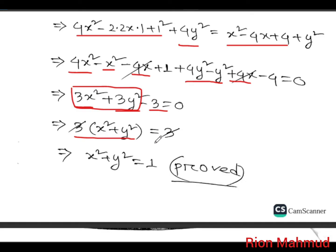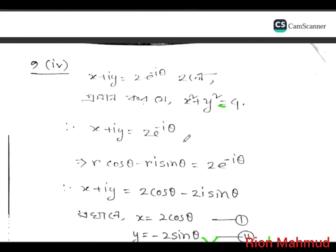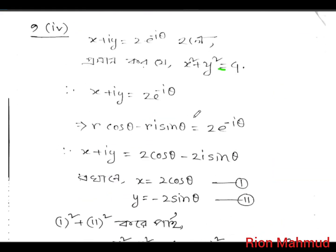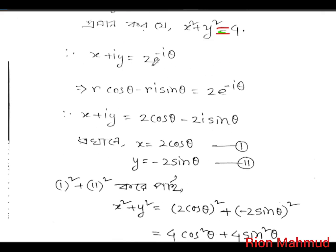We have x squared plus y squared result confirmed. For the next number: both seconds — x plus iy equal to some value. So x squared plus y squared equals 4. And I would say x plus iy for the second problem.